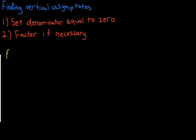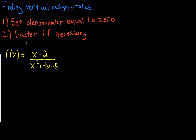Let's say your function f(x) is given by the equation (x + 2) over (x² + 4x − 5). Following step one, we set the denominator equal to zero: x² + 4x − 5 = 0.